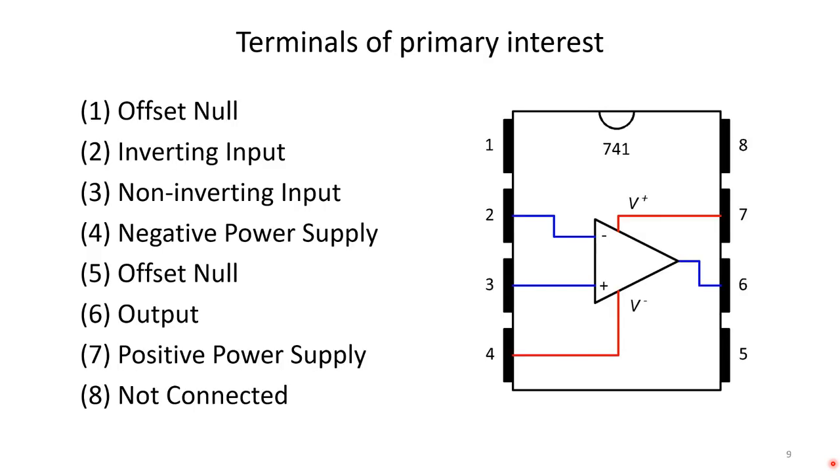Here's the pinout. The pins that we're really going to be concerned with are 2, 3, 4, 7, and 6, so the inverting and non-inverting input in 2 and 3, the negative and positive power supply in 4 and 7, and the output of the op amp in 6. Note that pin 8 is not connected. This is a top-down picture looking onto the chip, a helpful little representation when you start working with op amps in the lab.